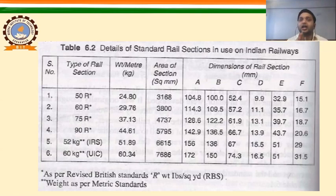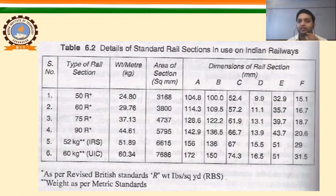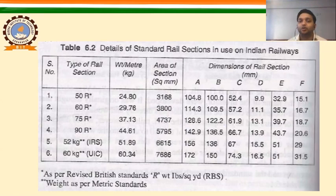To summarize this lecture, we have covered: introduction to rails, composition of rail steel, requirements for an ideal rail, comparison between double headed, bull headed, and flat footed rail sections, standard rail sections and their different lengths, and details of standard rail sections. In the next lecture, Part 2 of Lecture 3, we will discuss defects in the rail section, creep, and the theory of coning of wheels. Thank you for listening so patiently. Have a good day.